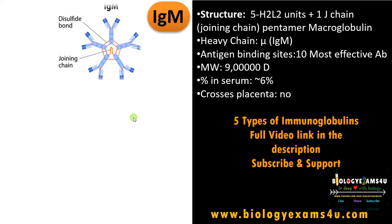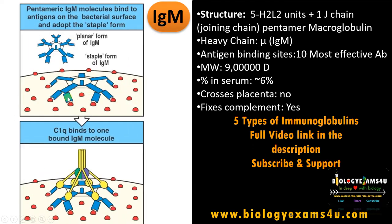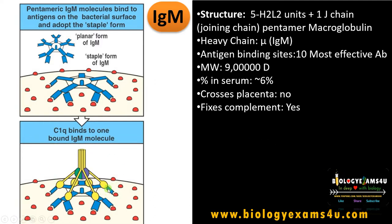IgM can fix complement. When IgM binds to a pathogen such as a bacterial surface, the Fc region can interact with complement proteins. Complement proteins are a set of serum proteins that act in a cascade, one after another, ultimately causing the destruction of the infected cell — either by phagocytosis or by the formation of the membrane attack complex. The Fc region of IgM specifically interacts with C1q, which is the first protein in the complement cascade, activating the cascade and leading to destruction of the infected cell.